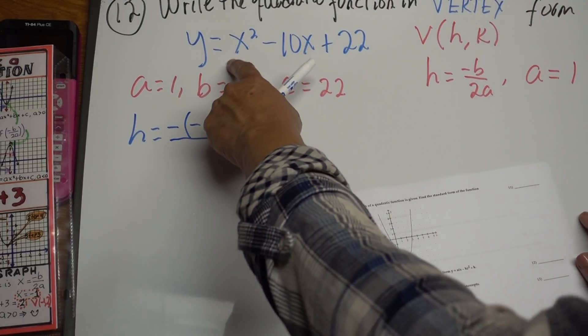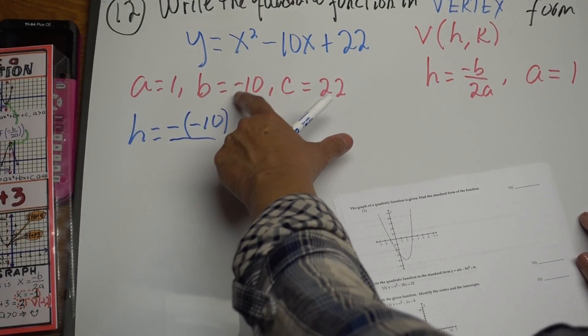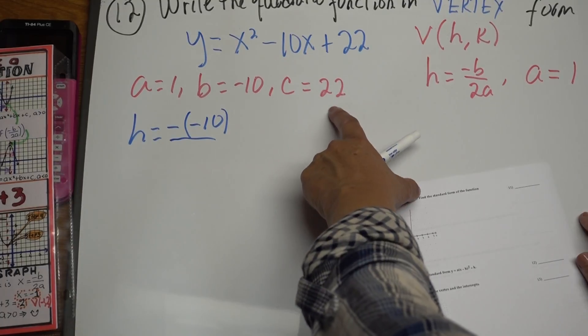So for that, you need to find A, B, and C. A is 1, B is negative 10, and C is positive 22.